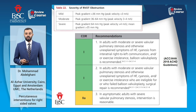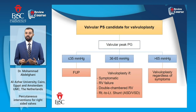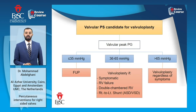The American College of Cardiology guidelines recommend more or less the same. To summarize the approach to patients with valvular pulmonary stenosis with anatomy suitable for valvuloplasty: patients with mild obstruction should be followed up, patients with extreme obstruction should be intervened upon regardless of symptoms, and patients in the intermediate zone should have valvuloplasty if they are symptomatic, have RV failure, severe hypertrophy leading to double-chambered RV, or right-to-left shunt over an ASD or VSD.